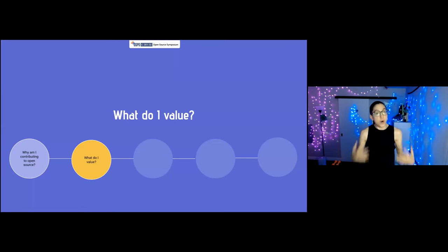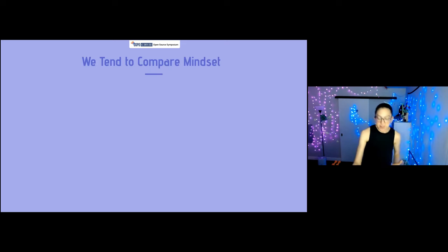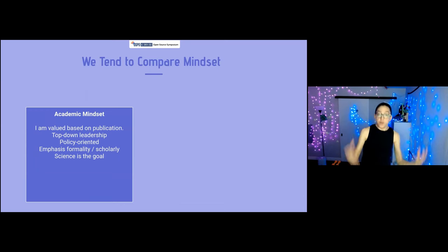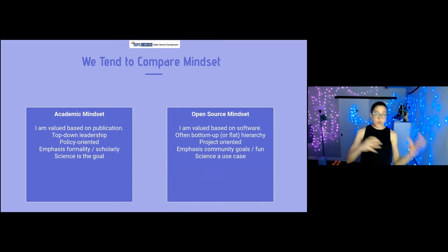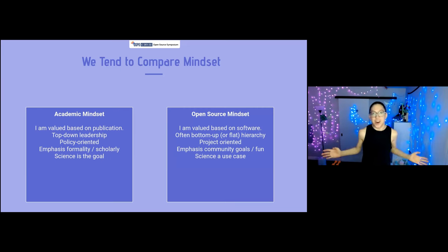This leads to the second question that I think is really important for open source introspection: what do I value? When we're interacting with the community, we can tend to compare mindsets. For example, you may have an academic mindset where value is based on your papers, there's top-down leadership from student up to professor, lots of rules and policy, you must be professional and scholarly at conferences, and science is the total underlying goal. When you come from an open source community, maybe the value is based on the software and the work you do. There's a flat hierarchy — nobody cares what your title is, just put in the PR.